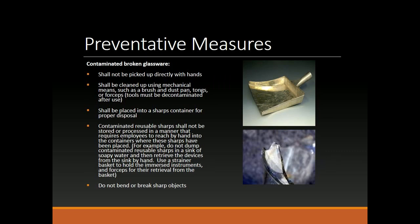Contaminated broken glassware shall not be picked up directly with hands. It shall be cleaned up using mechanical means such as a brush and dustpan, tongs, or forceps. Tools must be decontaminated after use and placed into a sharps container for proper disposal. Contaminated reusable sharps shall not be stored or processed in a manner that requires employees to reach by hand into containers where these sharps have been placed. For example, do not dump contaminated reusable sharps in a sink of soapy water and then retrieve the devices by hand. Use a strainer basket to hold the immersed instruments and forceps for retrieval.